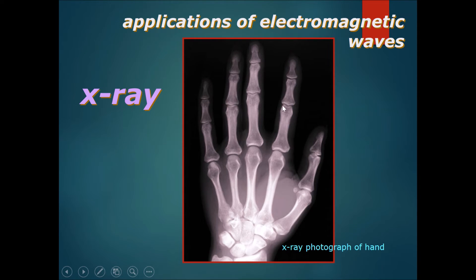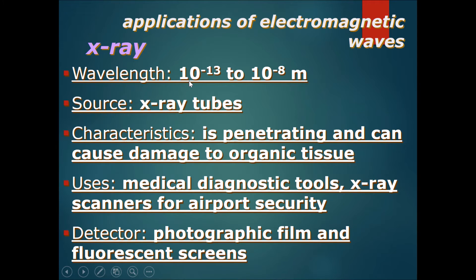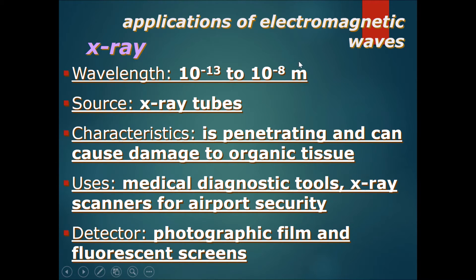The wavelengths of X-rays range from 10 to the power of minus 13 to 10 to the power of minus 8 meters, which is slightly longer than gamma rays. The source is X-ray tubes. X-rays are penetrating and can cause damage to organic tissue. They have a very small wavelength, therefore a very high frequency and quite a lot of energy — slightly lower than gamma rays, but still enough to penetrate and cause damage to tissue.